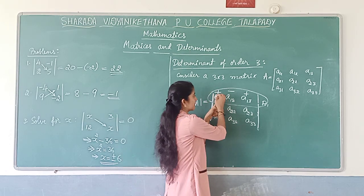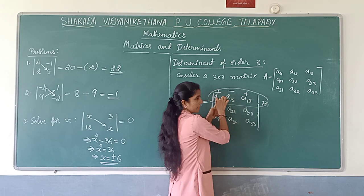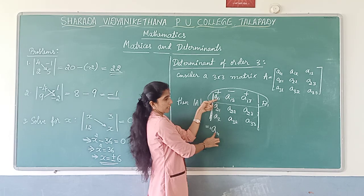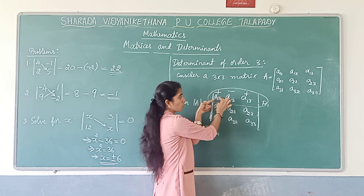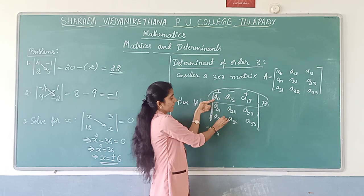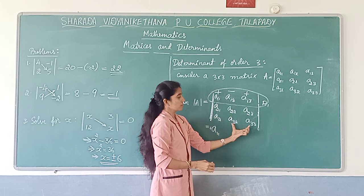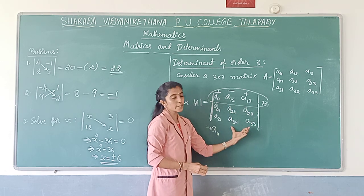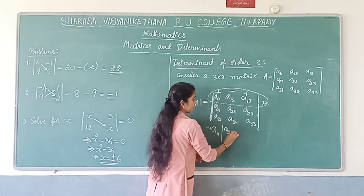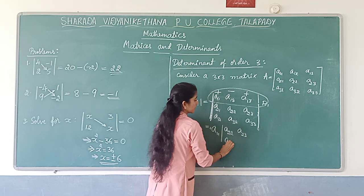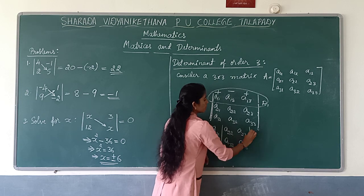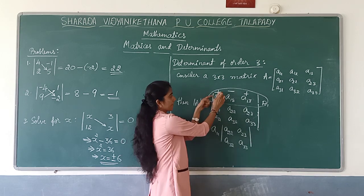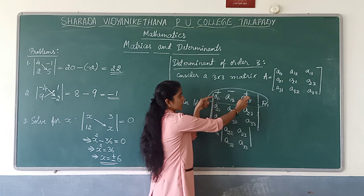Now, starting with the first element, plus A11. We have to delete the row containing A11 and the column containing A11. What remains is A22, A23, A32, A33 — a determinant of order 2. We write that remaining second-order determinant alongside A11.